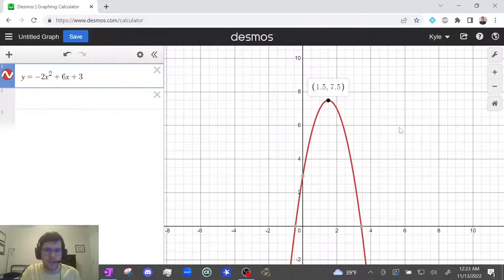So the maximum for this one, the vertex is 1.5 comma 7.5. The maximum is the y value, that's 7.5. And then the x value, where it reaches the maximum, is 1.5. So just make sure you understand that wording because, you know, clicking on the point, very straightforward.